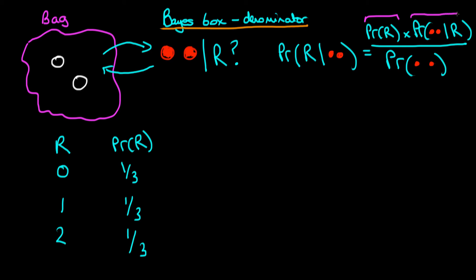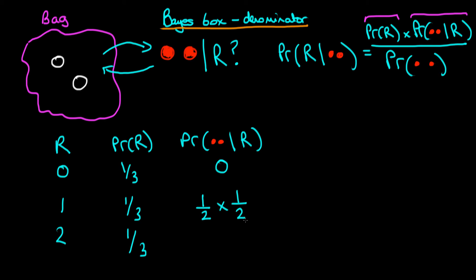The next column in the Bayes box represents the likelihood term — the probability of drawing two red balls conditioned on a particular value of R. If there are no red balls in the bag, this probability is obviously zero. For R equal to one, the probability of drawing two red balls is one half times one half, giving one quarter. If there are two red balls, it is certain we draw two reds, so the likelihood equals one. We can see that the likelihood is not a valid probability distribution, because adding all values in this column gives five over four, which does not equal one.